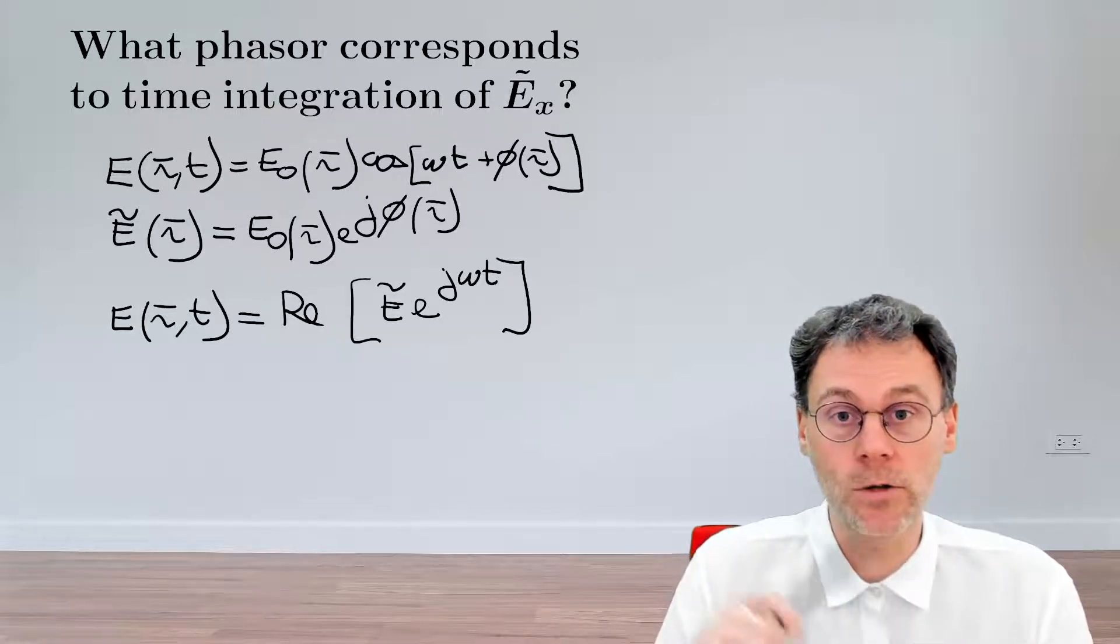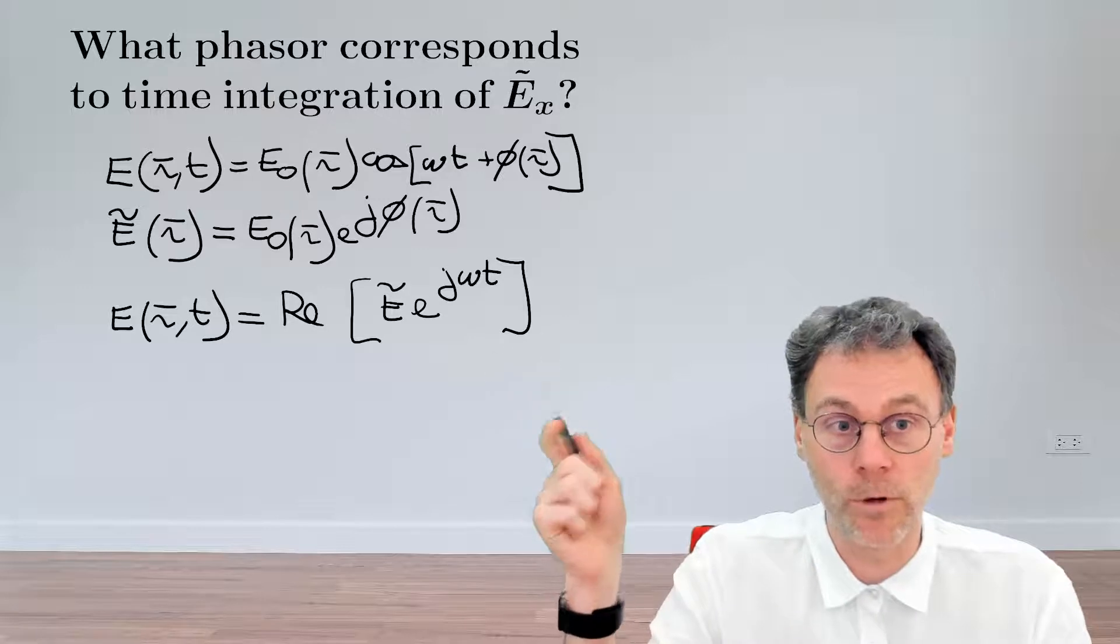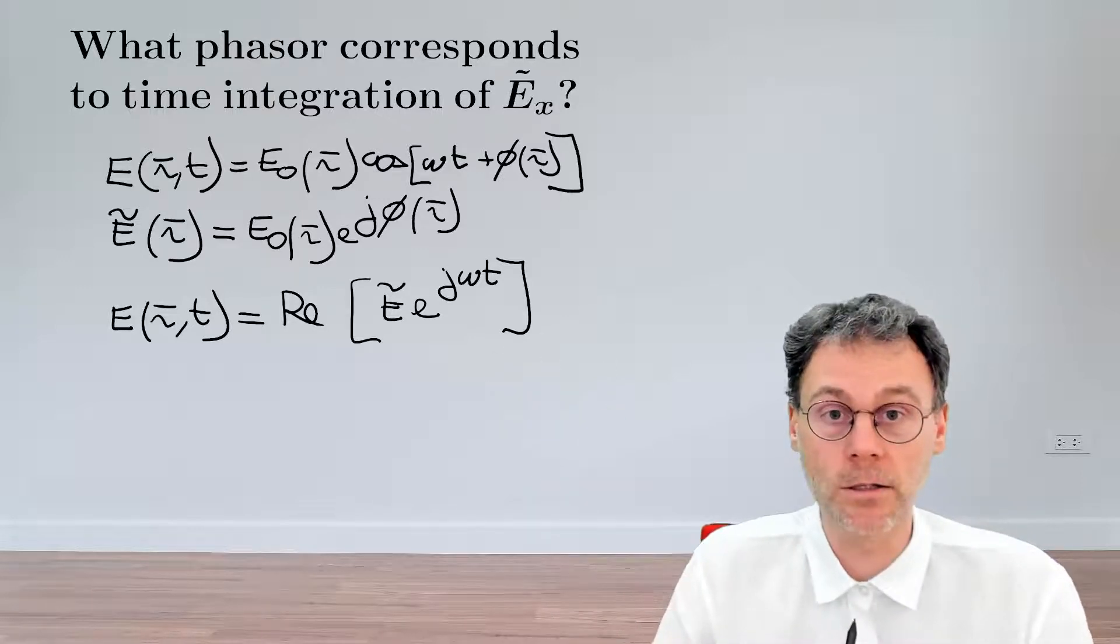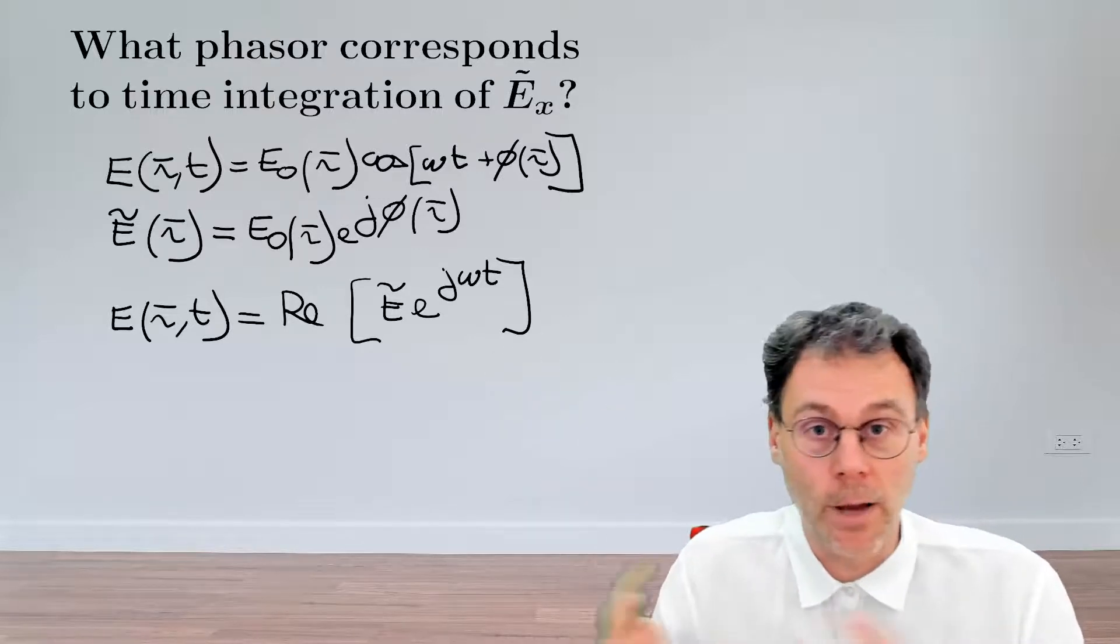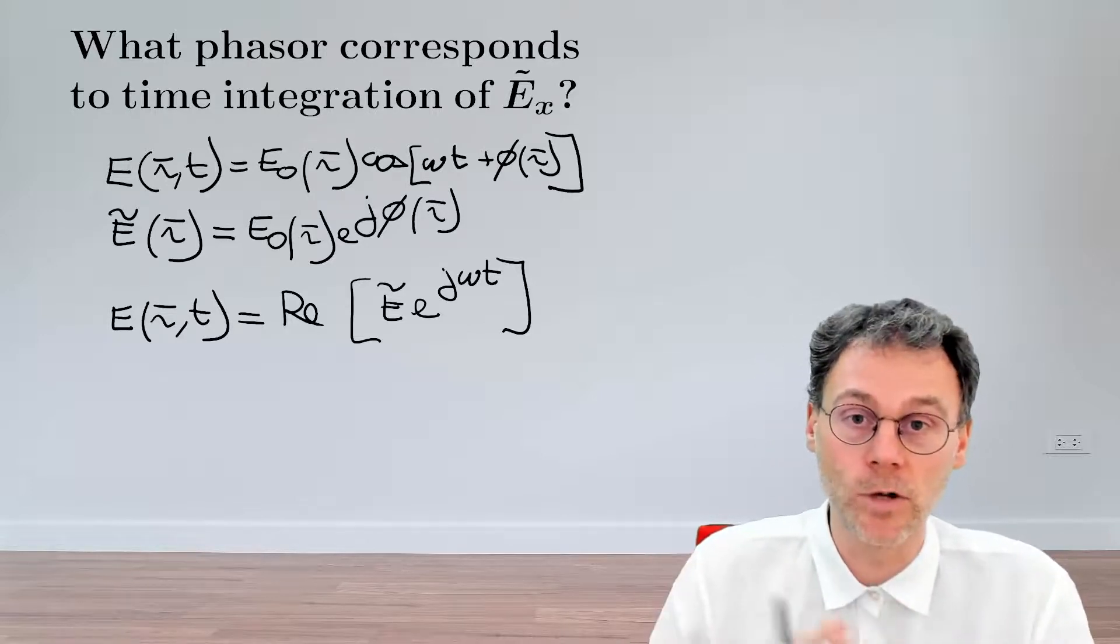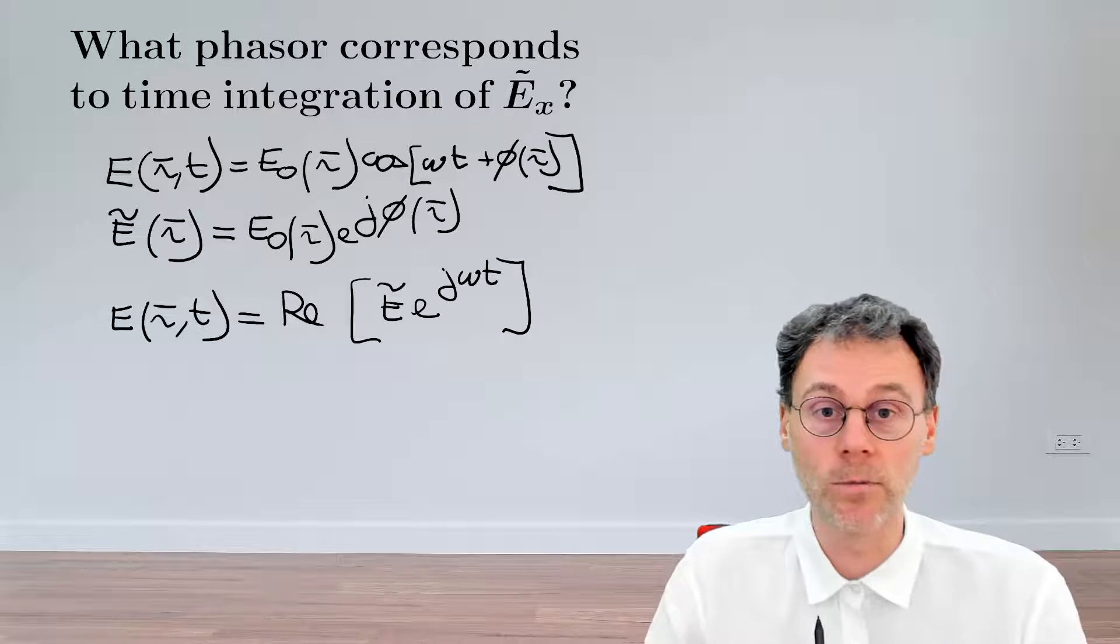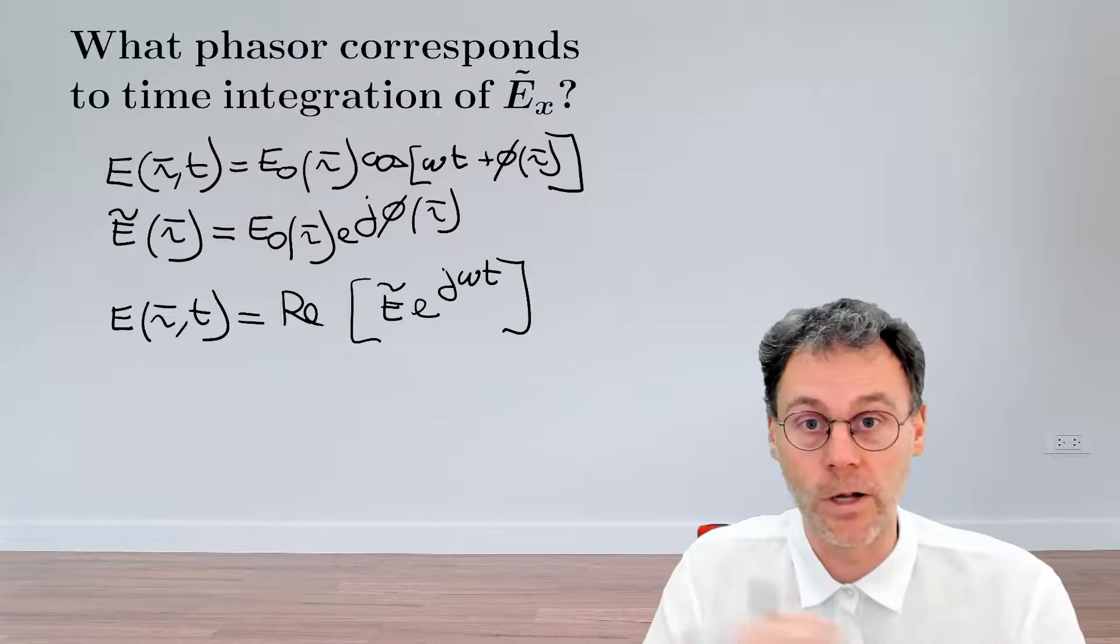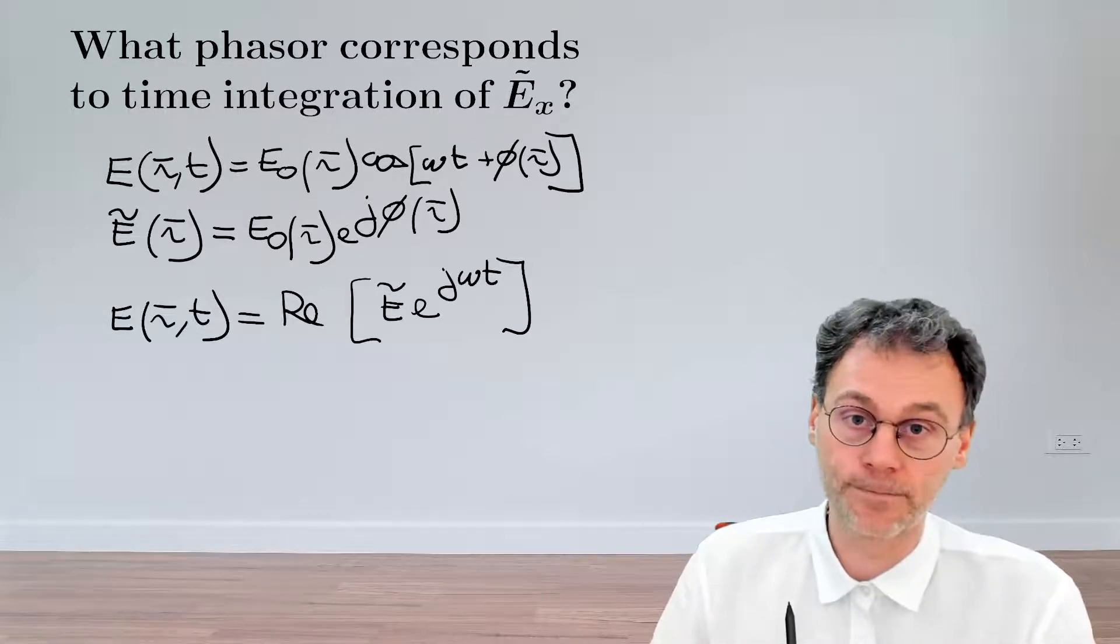It's worth pointing out here that we use exponential plus j ω t as a time dependence. Other people, which are perhaps a bit more negatively inclined, would use a minus sign there. So, that doesn't really matter. It's just a convention. The important part is to pick one convention and then to stick to it.